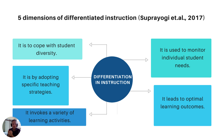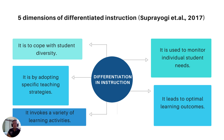Suprayogi identified five dimensions of differentiated instruction: to cope with student diversity, adopt specific teaching strategies, invoke a variety of learning activities, monitor individual student learning needs, and lead to optimal learning outcomes.